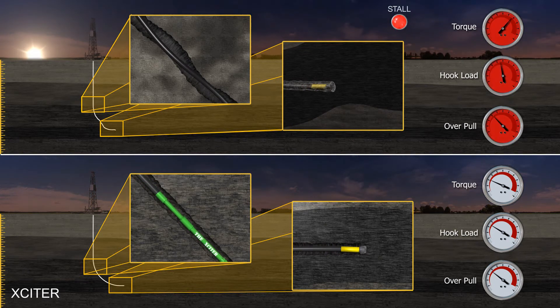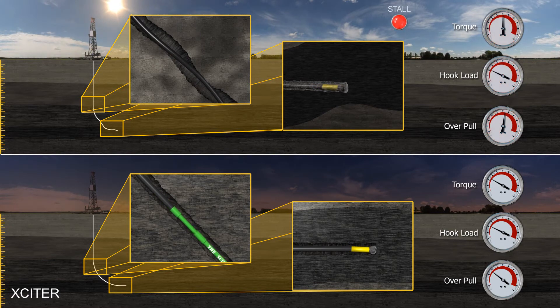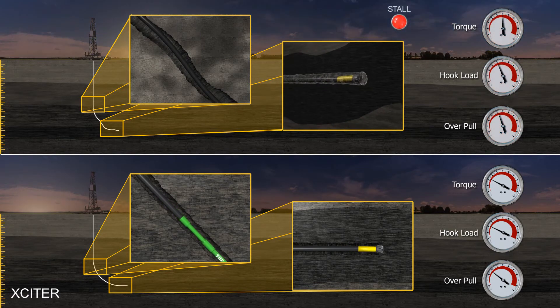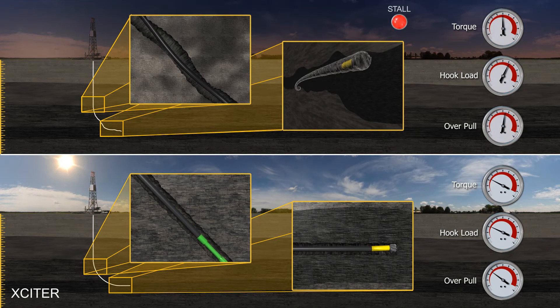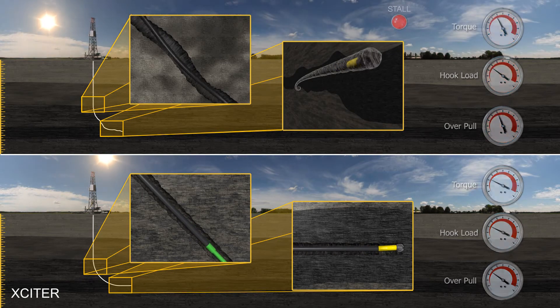Reducing or eliminating drill string friction with the Exciter provides a more constant weight-on-bit, giving a more consistent wellbore. This means reduced over-pull, allowing faster connection, tripping, and casing running time.